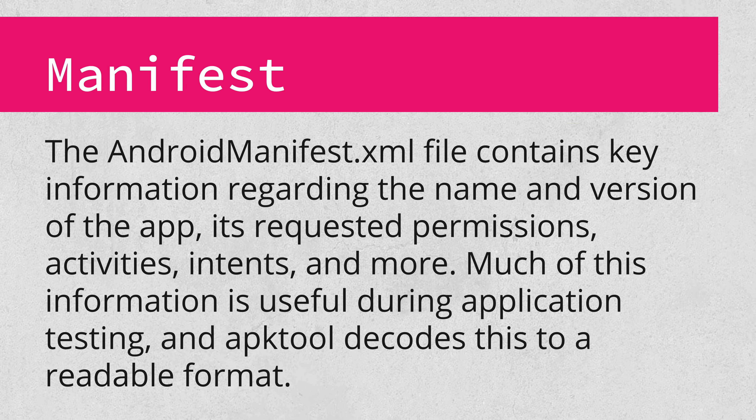The manifest, AndroidManifest.xml, is where a lot of the critical information for an Android app is stored. Permissions, activities, intents, and more all get defined and referenced here. APK tool also decodes this to a human readable format for you, as it's stored in a binary format in the APK.